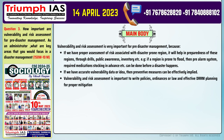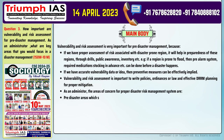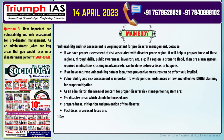As an administrator, the areas of concern for a proper disaster risk management system are: Pre-disaster areas which should be focused on are preparedness, mitigation, and prevention of the disaster. Post-disaster areas of focus are: Option A — Response; Option B — Recovery and rehabilitation.